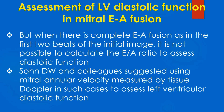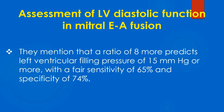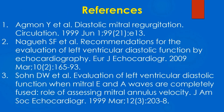Saund and colleagues suggested using mitral annular velocity measured by tissue Doppler in such cases to assess left ventricular diastolic function. They showed a good correlation of the ratio between peak fused mitral inflow velocity and peak fused mitral annular velocity with left ventricular diastolic pressure. They mentioned that a ratio of 8 or more predicts left ventricular filling pressure of 15 mmHg or more with a sensitivity of 65% and specificity of 74%.